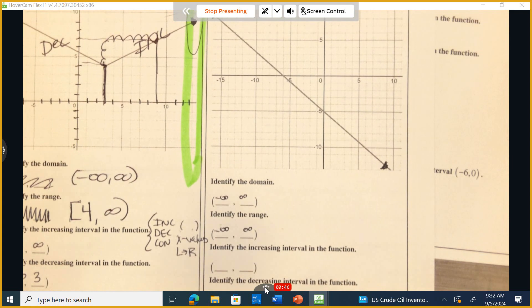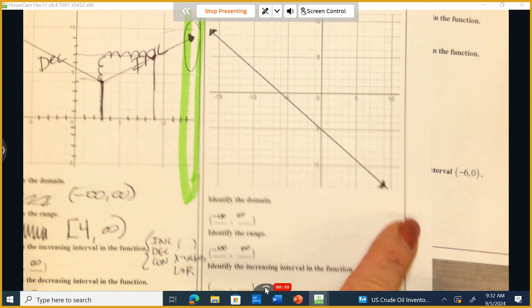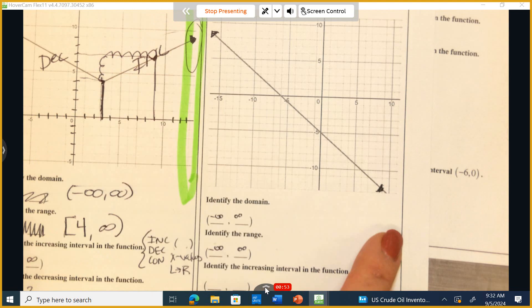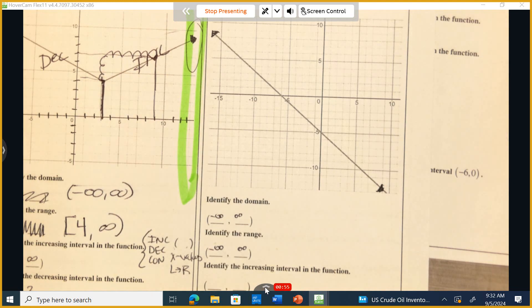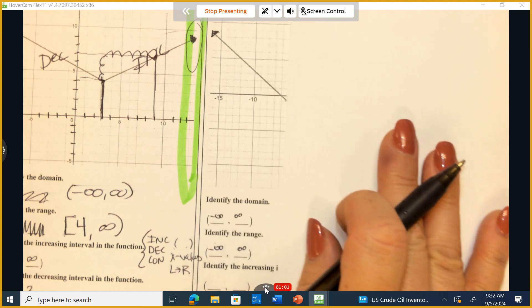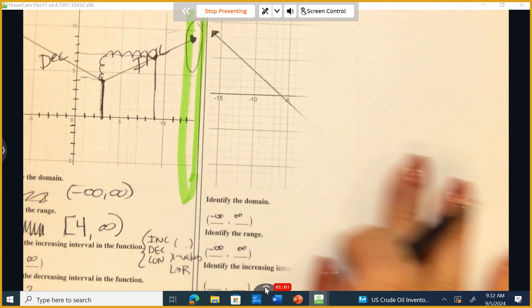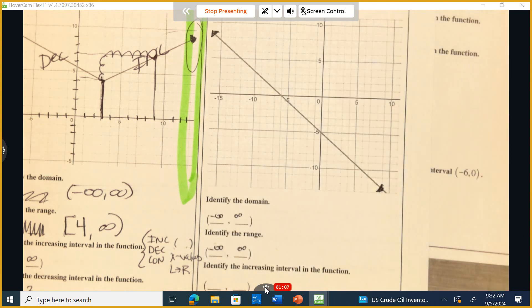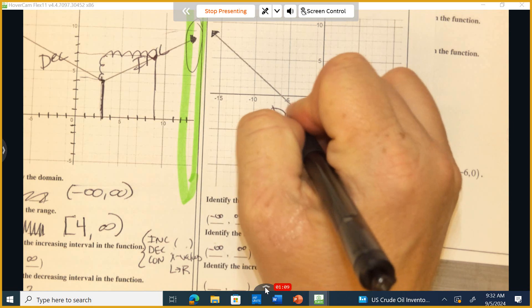So now let's look. We only have one piece to this function, so I need to decide is this one piece an example of an interval that is increasing, decreasing, or constant. So from left to right, if you were riding a bicycle along this road, would you be going uphill or downhill? Again, what would you be doing? Uphill or downhill? Downhill. And we use what word to describe downhill? Decreasing.